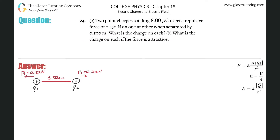Number 24, letter A. Two point charges totaling eight micro coulombs exert a repulsive force of 0.15 newtons on one another when separated by 0.5 meters. What is the charge on each?